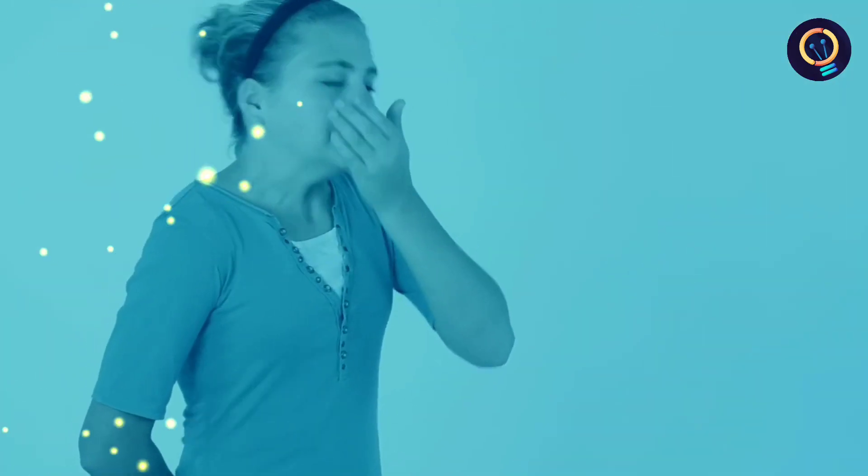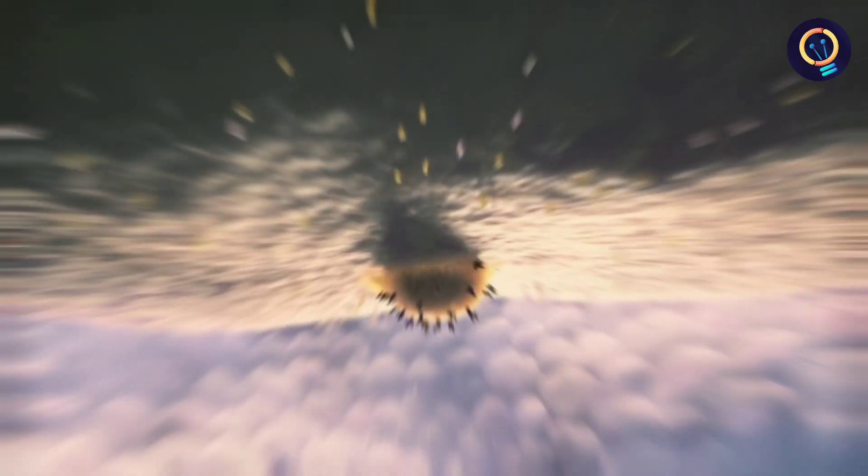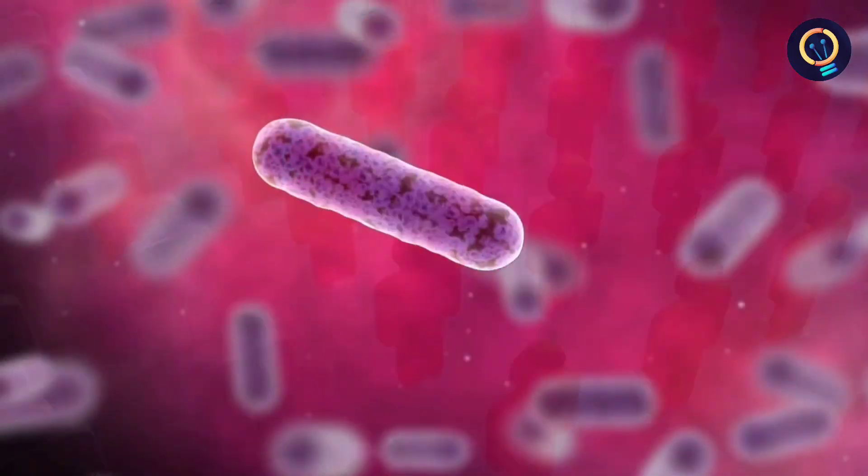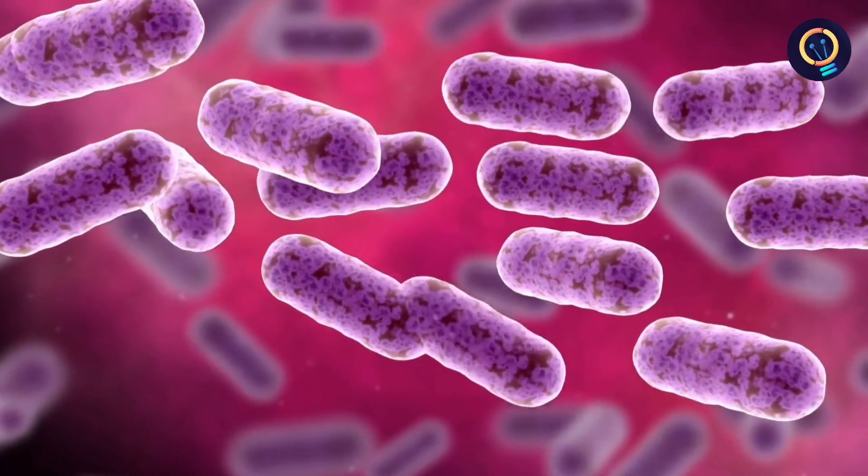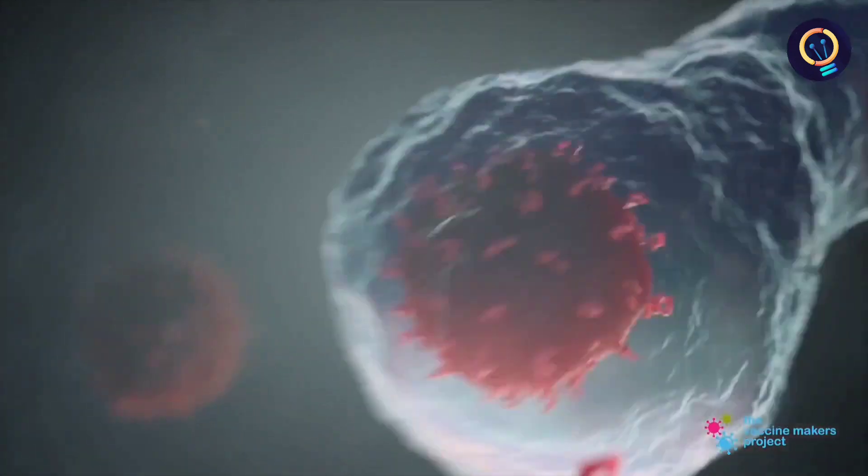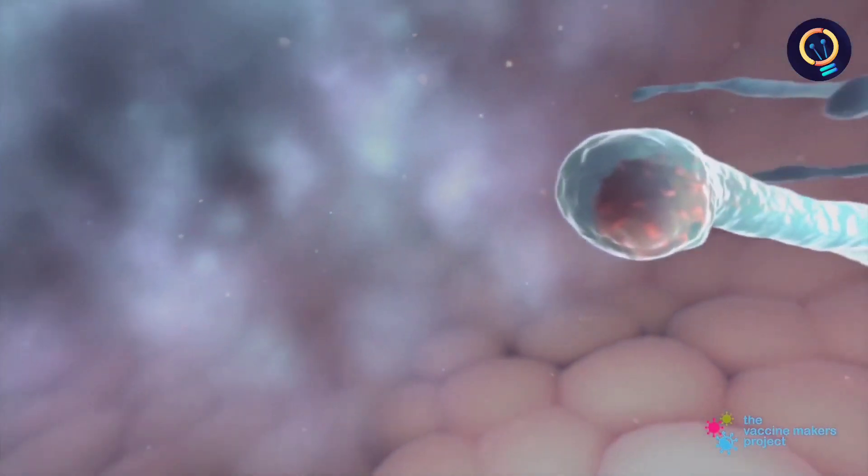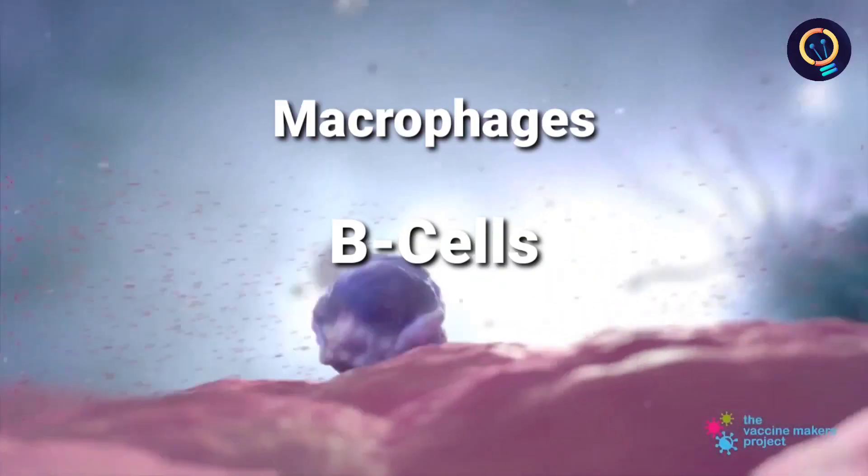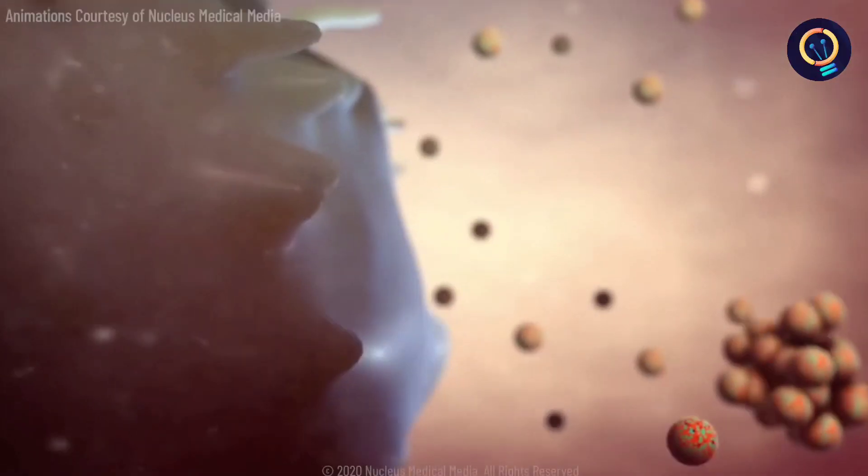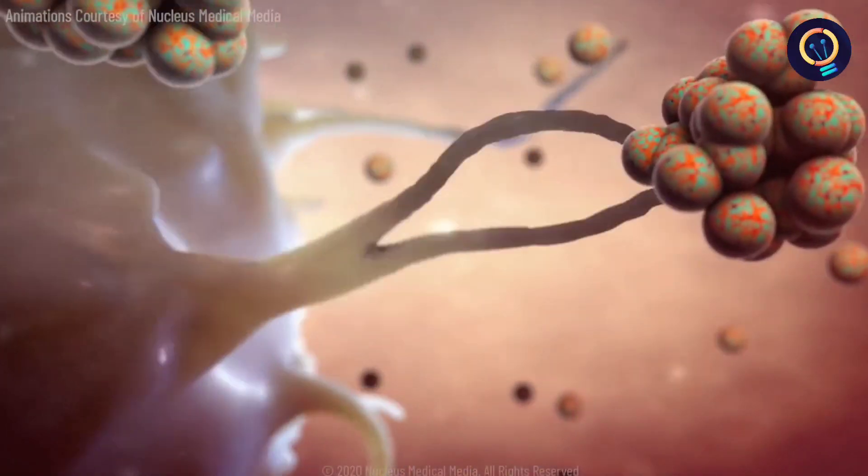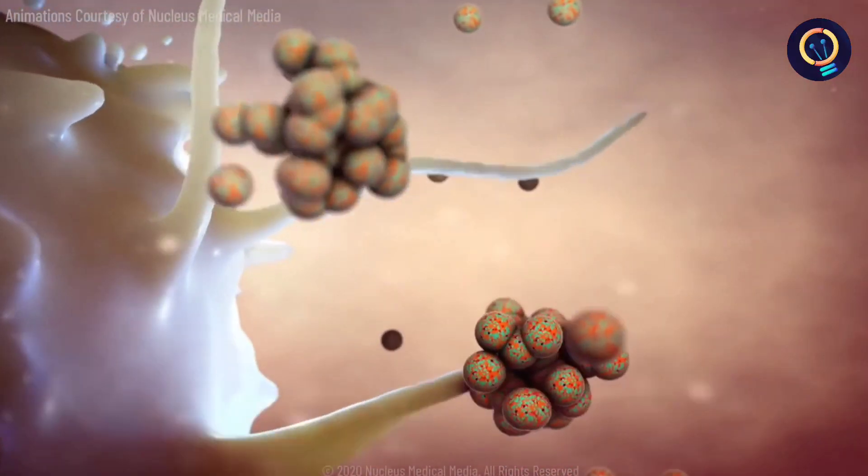When you get infected with a virus it begins taking over your cells machinery in order to make copies of itself but these eventually trigger an immune response. Your body begins creating special cells like macrophages, B cells, T cells that not only try and destroy the virus but also store information about it.